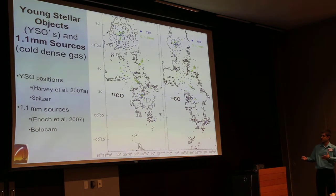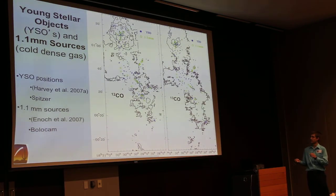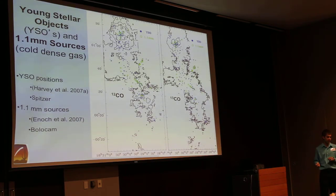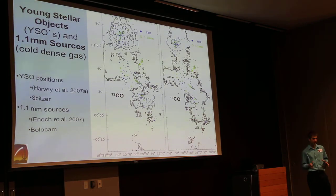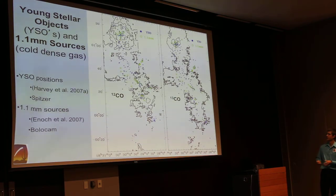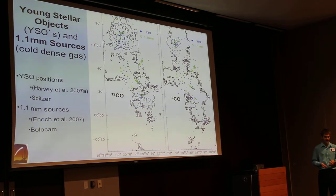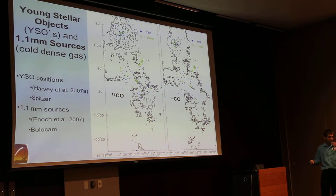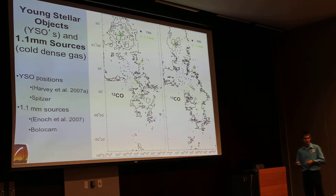Here I show the 12 and 13-CO integrated intensity maps overlaid with locations of young stellar objects as blue dots, and 1.1-millimeter sources as green. Young stellar objects are already-formed stars; 1.1-millimeter sources are locations of cold, dense gas where you'd also expect stars to form, but no star is there yet. The YSOs were obtained from Spitzer Space Telescope data, and the 1.1-millimeter sources from the Caltech PoloCamp camera. The YSOs are mainly concentrated in the Serpens core region — over 300 stars already formed there — whereas the 1.1-millimeter sources are more evenly distributed throughout the cloud.